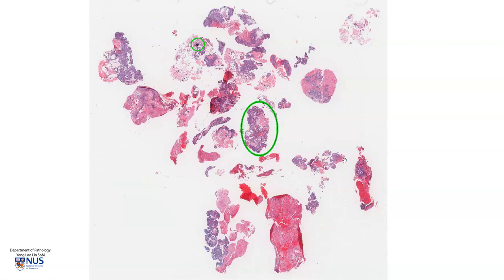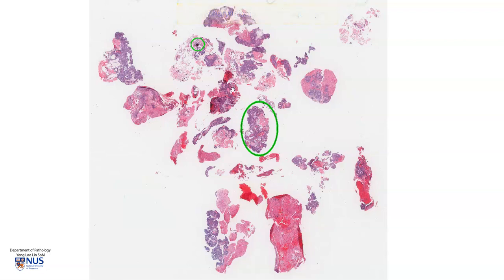Hello, this is a virtual microscopy slide showing an example of a craniopharyngioma, adamantinomatous type. On low magnification, we can see that this is very fragmented, and of course this is because of the result of surgery in such tumors.